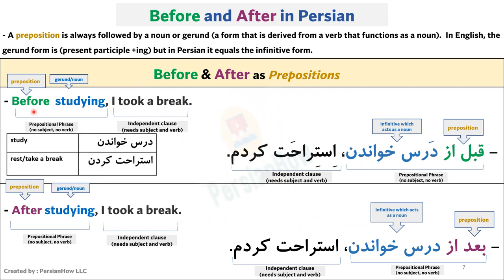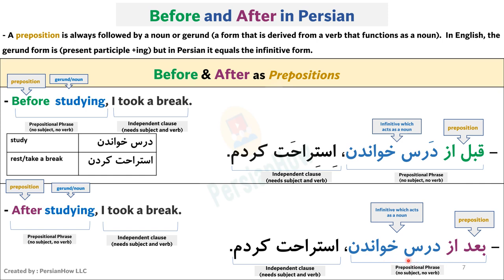Let's go over this example: 'Before studying, I took a break.' To study is darskhandan; to take a break is estarahat kardan. In Farsi: qablaz darskhandan, estarahat kardan. It would be wrong to conjugate darskhandan here, because then it's no longer a gerund — it turns into a verb, and it's wrong to have a verb after a preposition. So we keep it as the infinitive form. One more time: qablaz darskhandan, estarahat kardan. Next: 'After studying, I took a break.' Same example but before is switched to after: ba'daz darskhandan, estarahat kardan. Same rule — preposition must be followed by a gerund or infinitive form. The more formal forms: pishas darskhandan and pasas darskhandan, estarahat kardan.